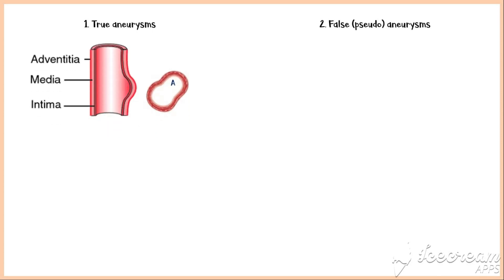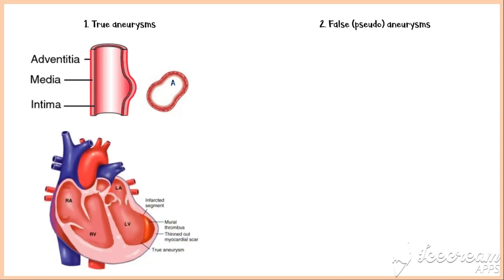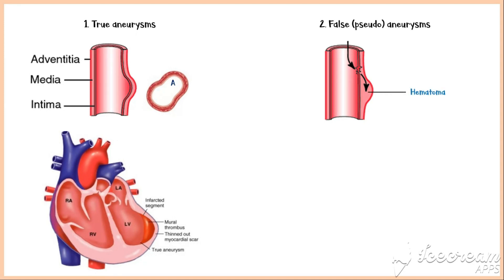Aneurysms can be classified as true aneurysms and false, or pseudo-aneurysms. True aneurysms occurring in an artery involve all three layers of the artery, and if it occurs in the heart, it involves the full thickness of the heart wall. Conversely, false aneurysms result when there is a defect in the arterial wall that leads to the formation of an extravascular hematoma that communicates with the intravascular space. Here, the hematoma is not surrounded by all three layers of the artery.